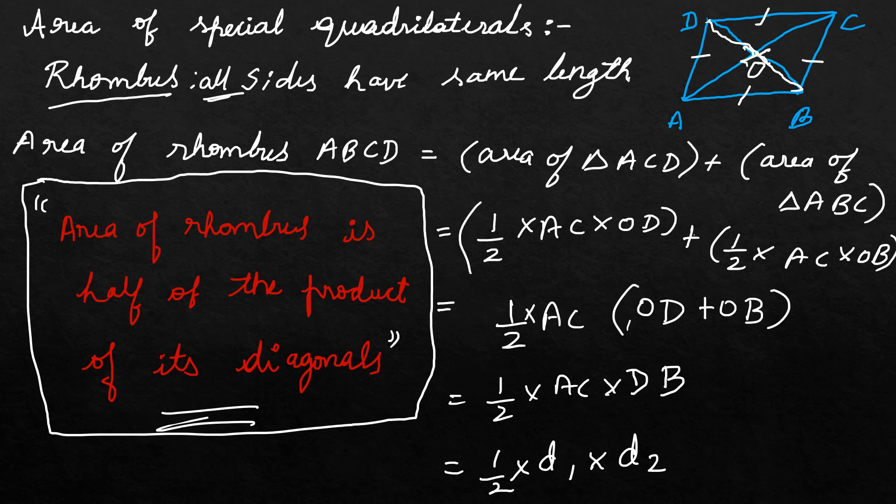Keep the formula in your mind: area of a rhombus ABCD is equal to half into d1 into d2, where d1 is the diagonal one and d2 is the diagonal two, length of diagonal one and length of diagonal d2.